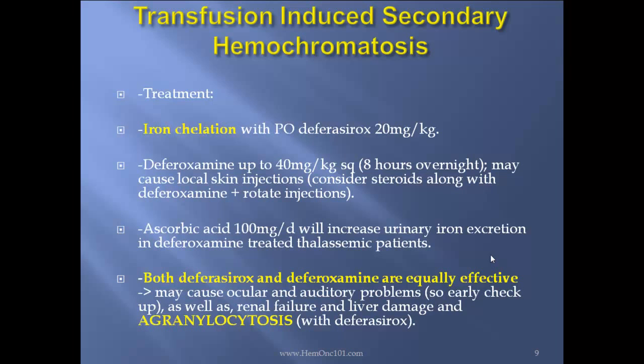Ascorbic acid 100 milligrams a day will increase urinary iron excretion in deferoxamine-treated thalassemic patients. Remember, both deferasirox and deferoxamine are equally effective, but they may cause ocular and auditory problems, so early checkup is essential, as well as renal failure and liver damage, and agranulocytosis in the case of deferasirox.